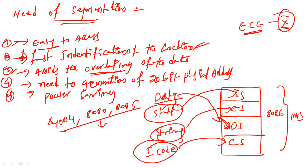If you want to access only data-related content, the cursor goes into the data segment and accesses that particular data. There is no need to check other segments while executing. If it is code segment data you want to access, the cursor goes into the code segment location and reads that data. There is no need to check all segments at a time - automatically it avoids overlapping. This is possible with the 8086 microprocessor, not for remaining microprocessors.